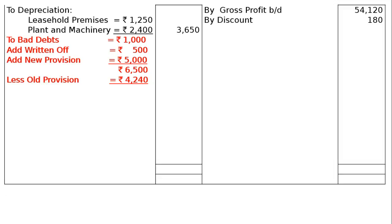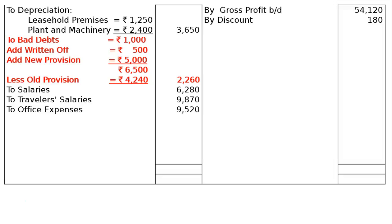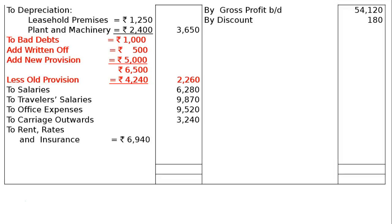Next items: to salaries rupees 6,280; to traveller salaries rupees 9,870; to office expenses rupees 9,520; to carriage outwards rupees 3,240. To rates and insurance rupees 6,940. Here we have adjustment (e): insurance premium amounting to rupees 680 is to be carried forward to the next year.